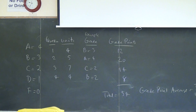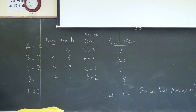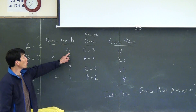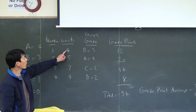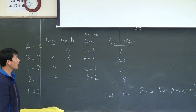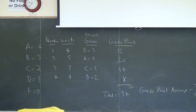So depending on your grade — for example, if you had a B grade on question 1, the grade points for question 1 is 4 times 3, which is 12. You can calculate the grade points for the rest of the questions the same way.